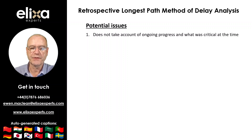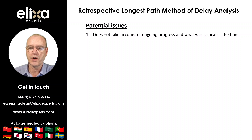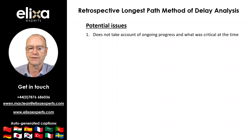As demonstrated in my first video, I highlighted that the retrospective longest path method of delay analysis might prove unreliable in dispute resolution because the method does not take account of ongoing progress and what was critical at the time. Instead, it stands at the end of the project looking back to ascertain what the longest path through the as-built program was. This can mean critical activities at the time are ignored and that critical delays are incorrectly allocated to non-critical activities of work.